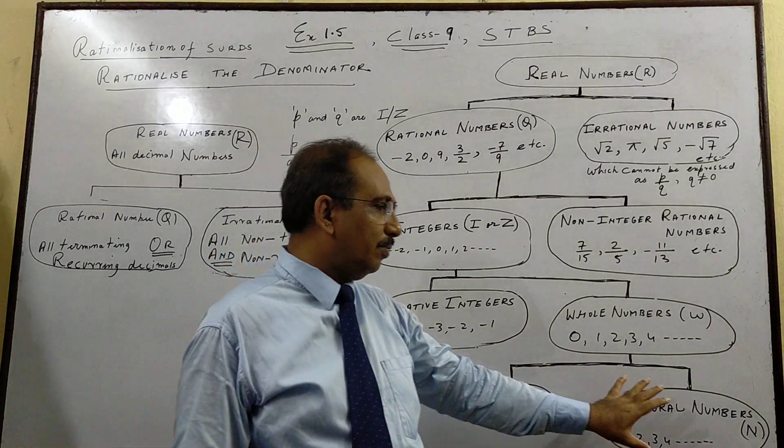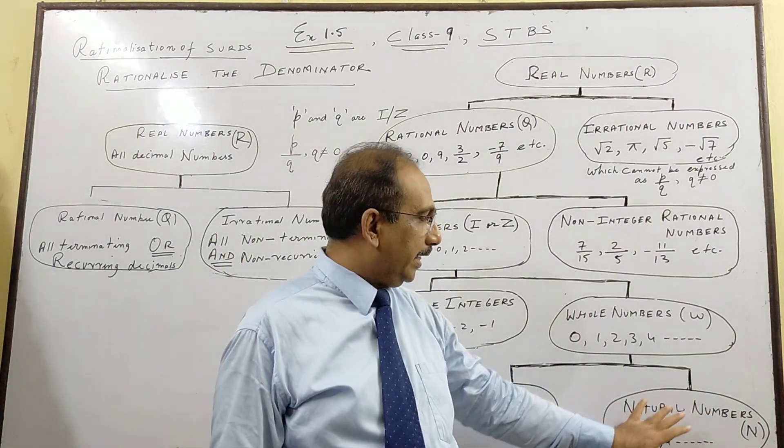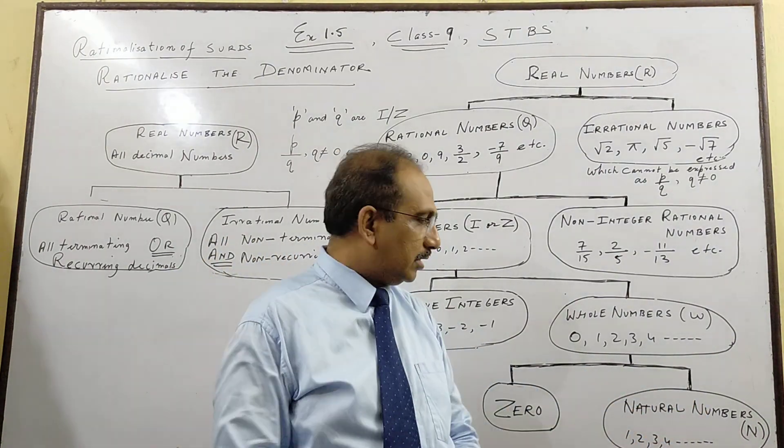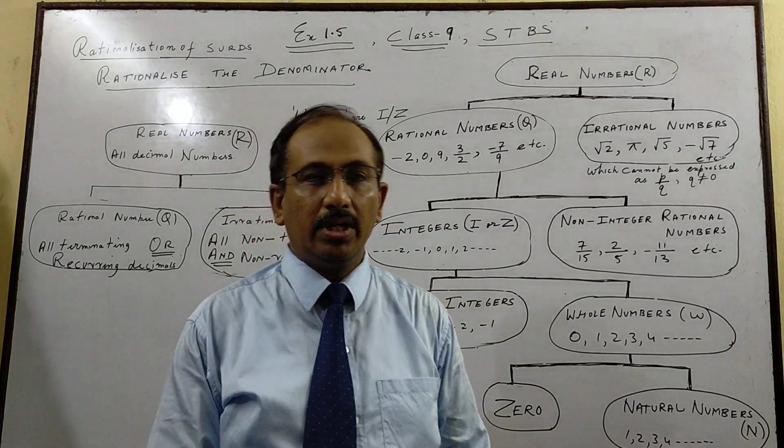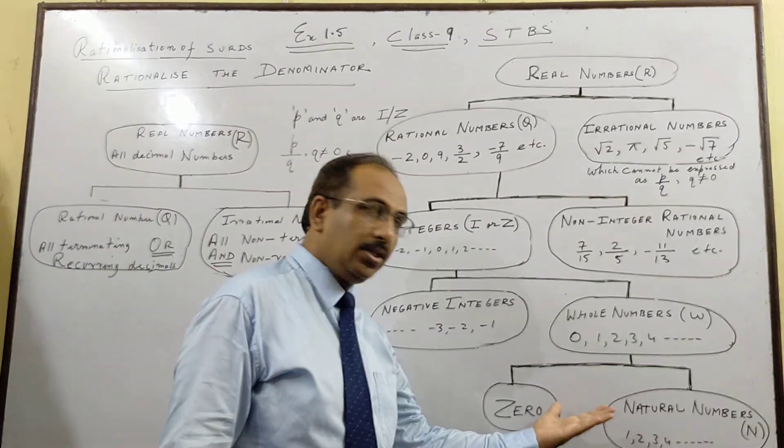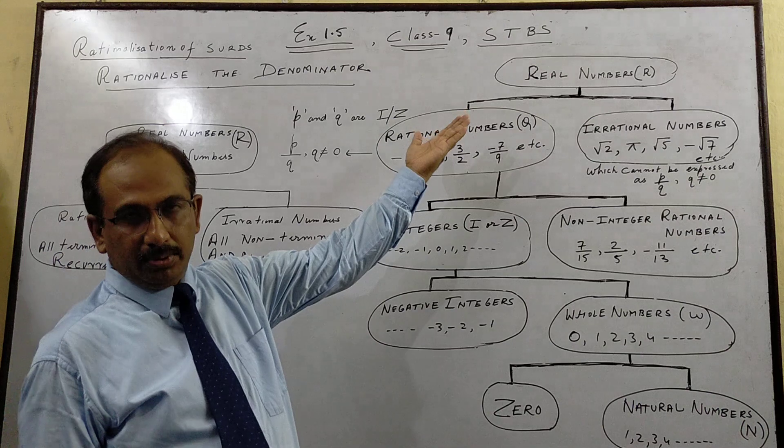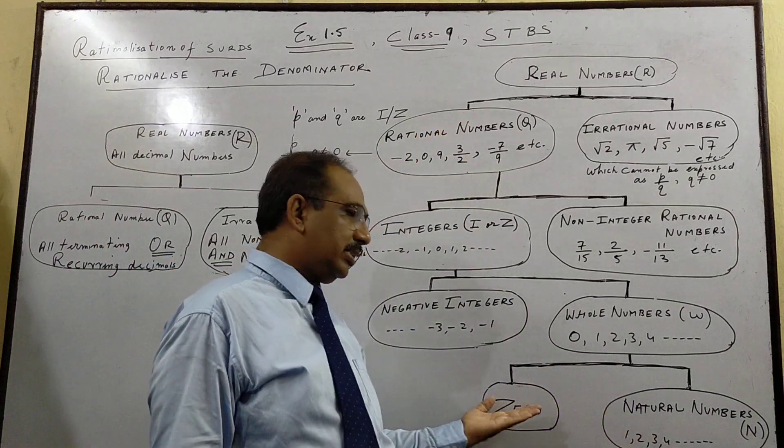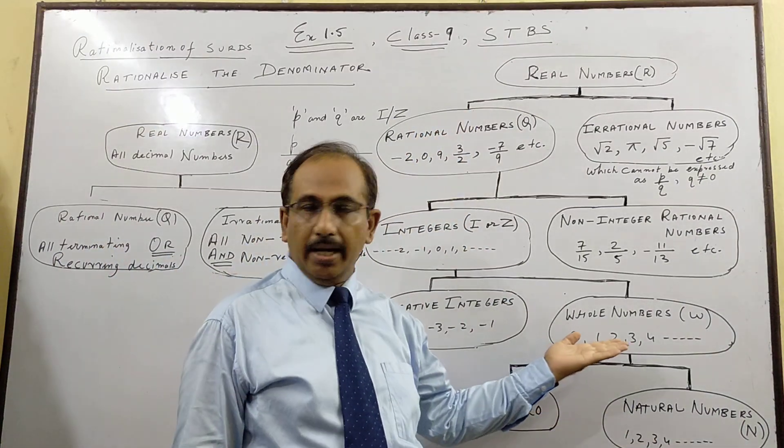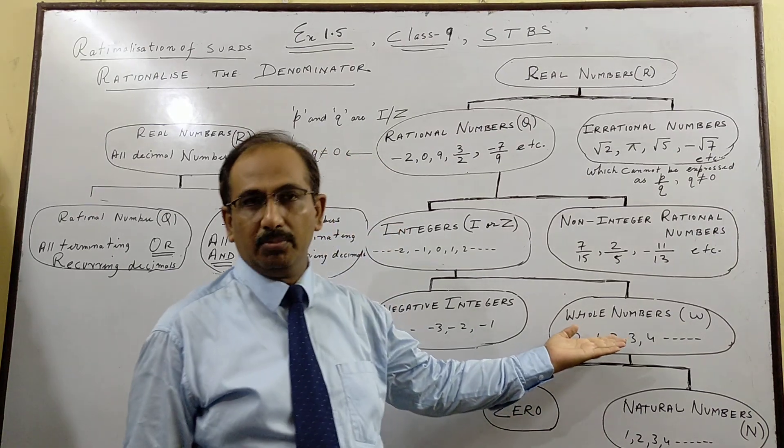First thing, as you know from class 6, 7, natural numbers start from 1, 2, 3, 4. If we add 0, so we are going from back to up. Natural number with 0 gives you whole numbers.